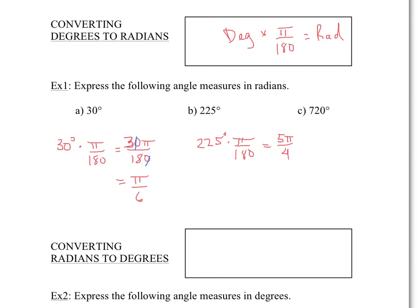And 720, you might be able to do this without calculating it, but we'll prove the calculation. Notice that 720 is two full circles. Well, if one circle is 2π, two full circles is 4π. But we'll prove this using some math. So 720 times π over 180. And if you simplify 720 over 180, you get 4π.